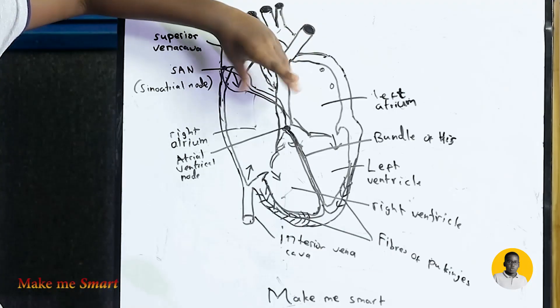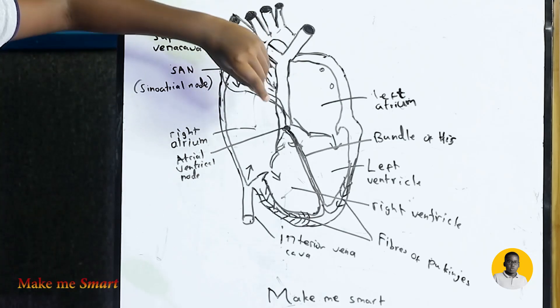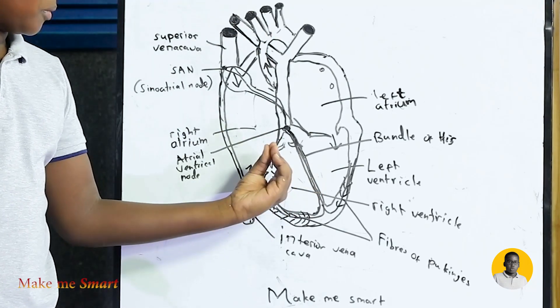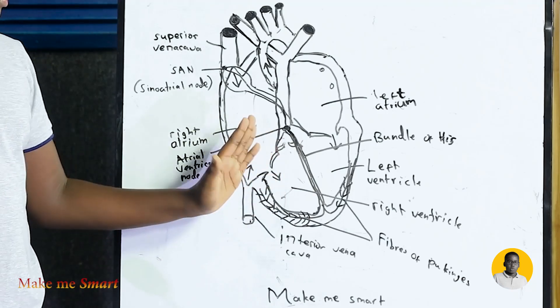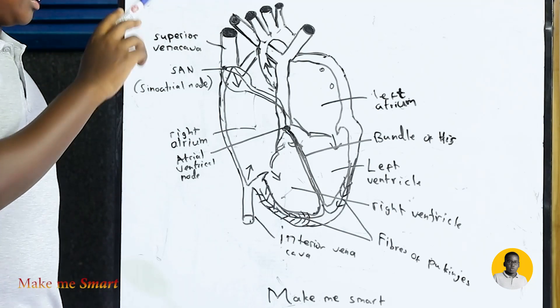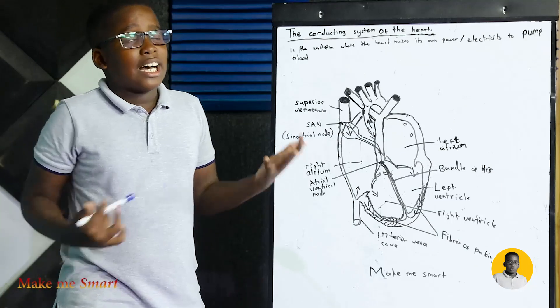And then the lower chambers push blood up through the pulmonary vein into the aorta. Some people ask why is the heart smaller than the body?